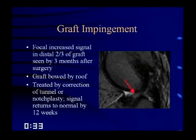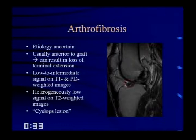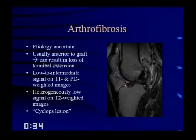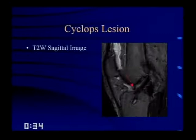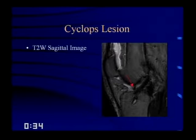Arthrofibrosis has an uncertain etiology. It's usually situated anterior to the graft and can result in loss of terminal extension. On imaging, it shows low to intermediate signal on T1 and proton density-weighted images, and low signal — though more heterogeneous — on T2-weighted images. It's called a cyclops lesion because it looks like a little red eye to the arthroscopist. If you see low signal intensity on T2 sitting in front of the graft, raise the possibility of fibrosis or a cyclops lesion, particularly if the patient cannot fully extend the knee.